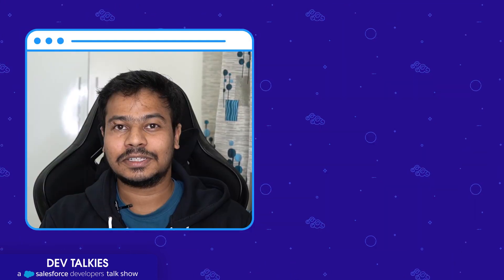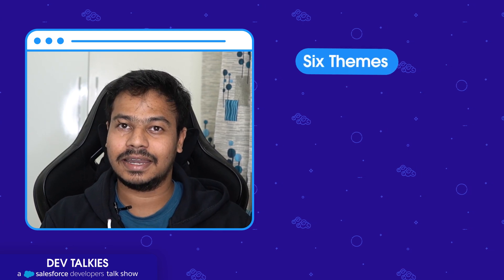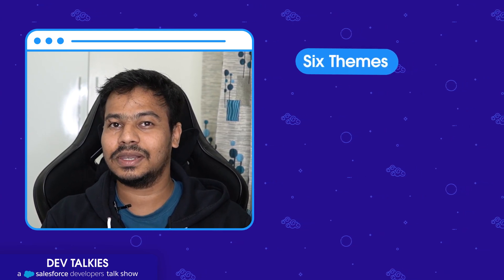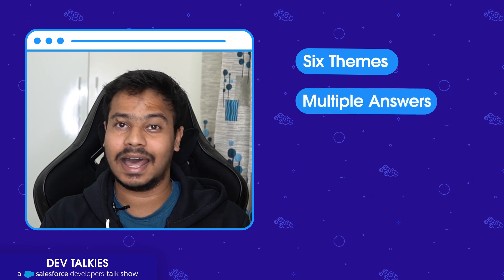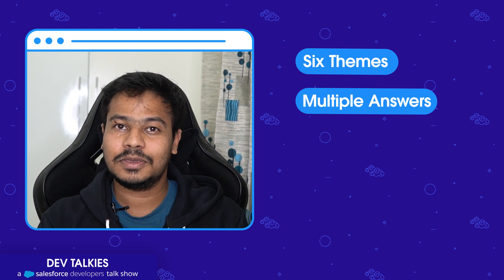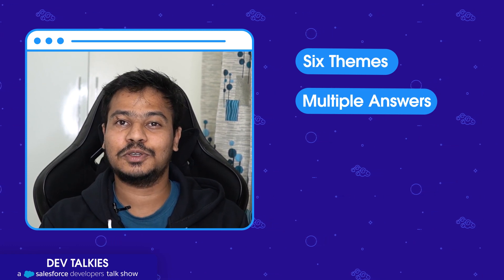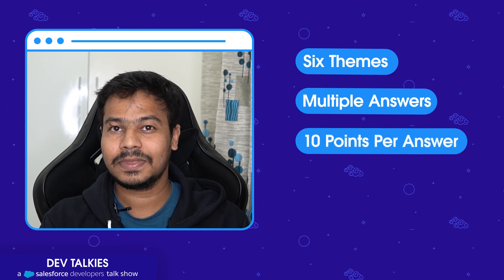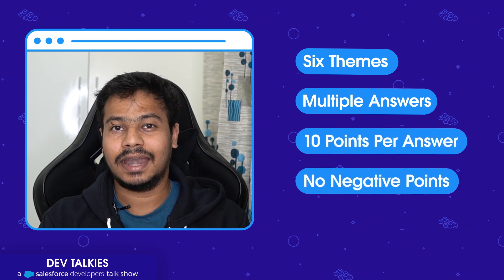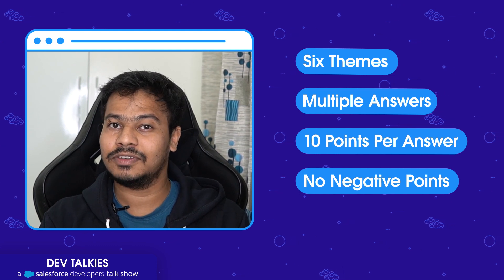Let me explain the rules. We have six themes, and each theme will have a question, and each question will have multiple right answers. As a player you can choose multiple right answers, and for each right answer you select you get 10 points. There are no negative points. At the end of the game, the player who is leading with the most points will be the winner.